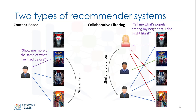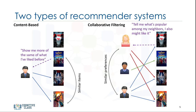Collaborative filtering is based on a user saying, tell me what's popular among my neighbors because I might like it too. Collaborative filtering techniques find similar groups of users and provide recommendations based on similar tastes within that group. In short, it assumes that a user might be interested in what similar users are interested in.